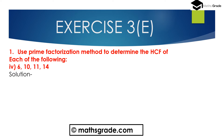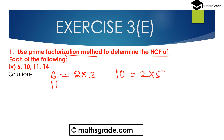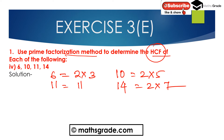Now question number 4: find the HCF of 6, 10, 11 and 14 using the prime factorization method. Prime factorization of 6 is 2 × 3. Prime factorization of 10 is 2 × 5. Prime factorization of 11 is 11 only. Prime factorization of 14 is 2 × 7. Both 2, 3, 5, 11 and 7 are prime numbers. There is no common factor among 6, 10, 11 and 14.